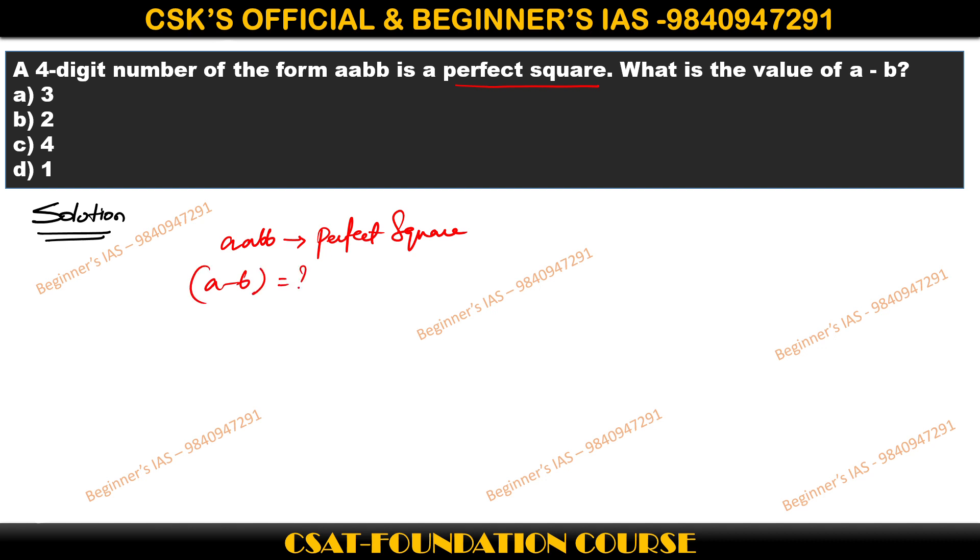Remember, here the number is of the form aabb, has to be a multiple of 11. In such a case, multiples of 11 are 11 squared, then 22 squared, then 33 squared, then 44 squared, and so like that. This is nothing but 121. Since it is a four-digit, I am not dealing with 11 squared.